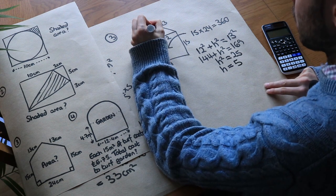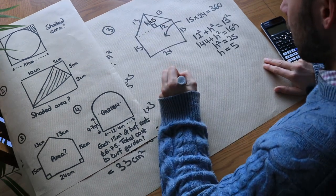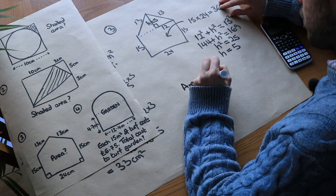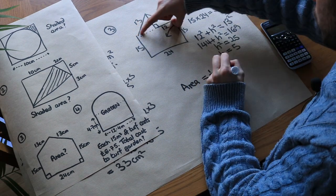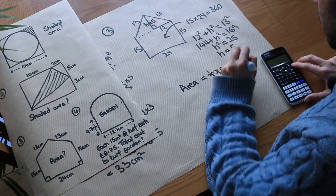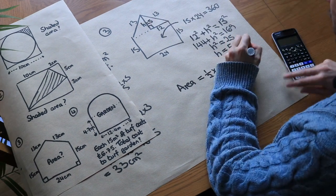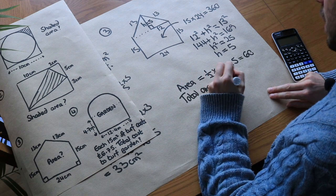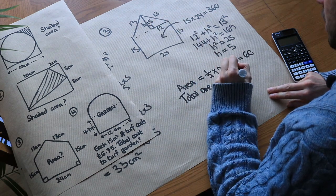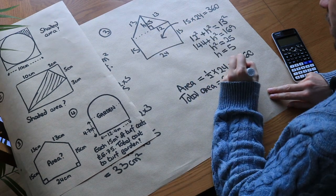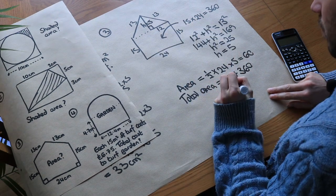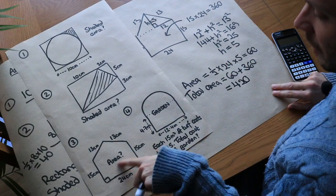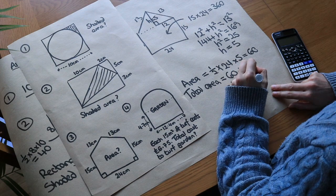So we now know that H is 5. That means the area of the whole triangle at the top is half times the base (24) times the height (5), which gives us 60. So the total area equals the triangle 60 plus the rectangle 360, which is equal to 420 centimetres squared.